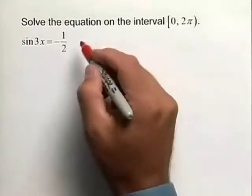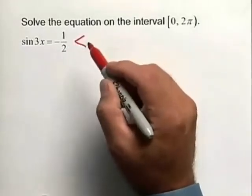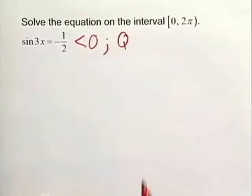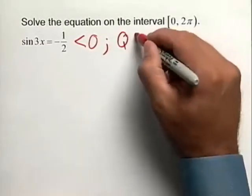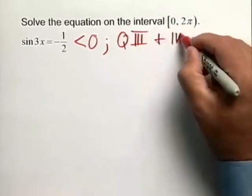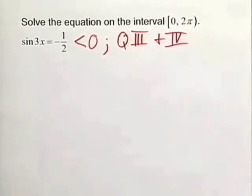First thing you want to do is recognize the sine value is negative or less than 0. And what this tells us is that our answer is going to lie in quadrant 3, and another answer will lie in quadrant 4. So we'll keep that in mind as we solve this trig equation.